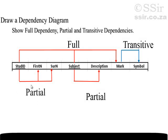A partial dependency is a dependency — a field — that is only dependent on some part of the primary key. Our primary key is student ID and subject, but first name is only dependent on the student.